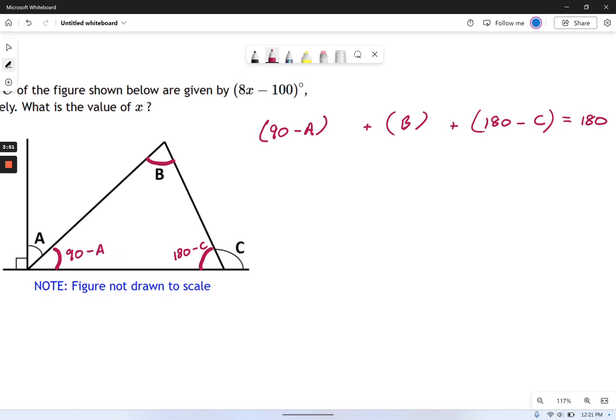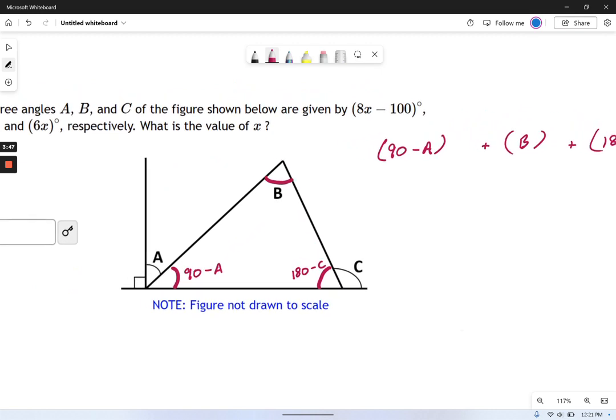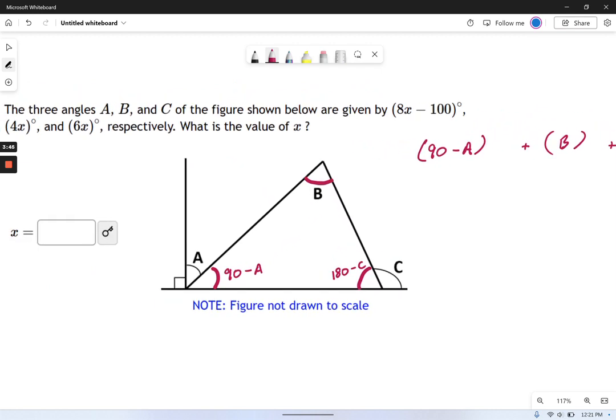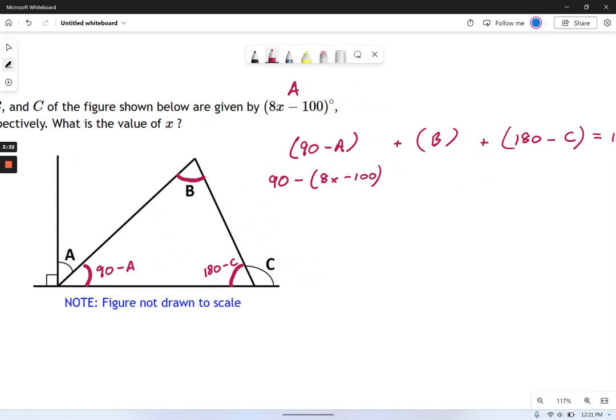But we still need to figure out what this stuff is in terms of x. So now I'm going to have to start making substitutions. So what is a? We're told that a is 8x minus 100. So up here I've got 90 minus 8x minus 100 degrees. That's the first part.